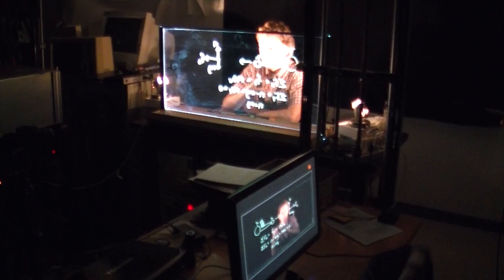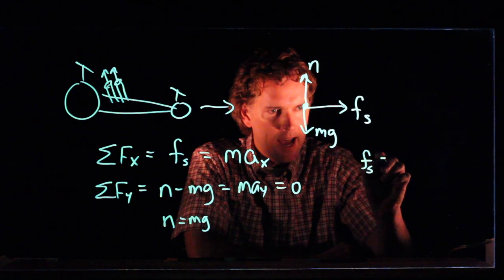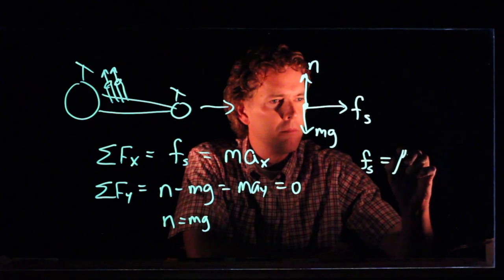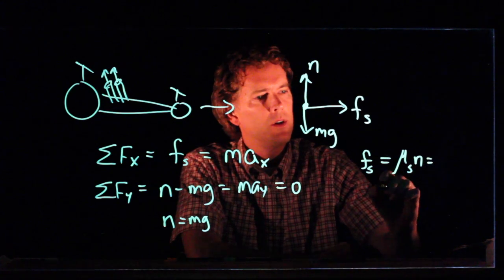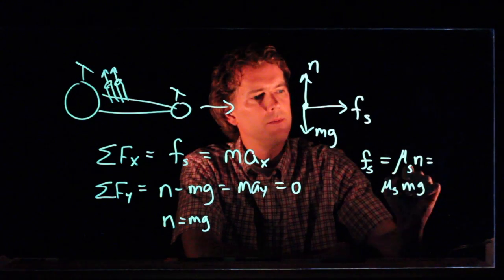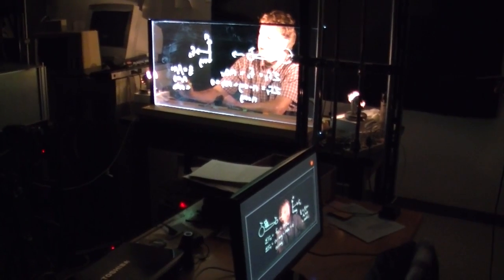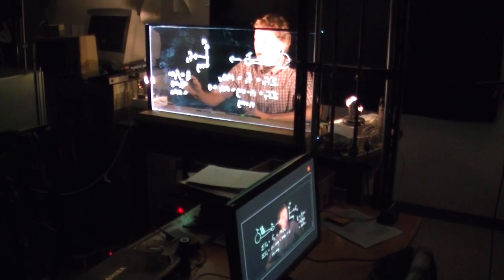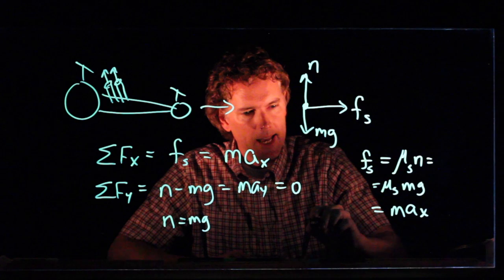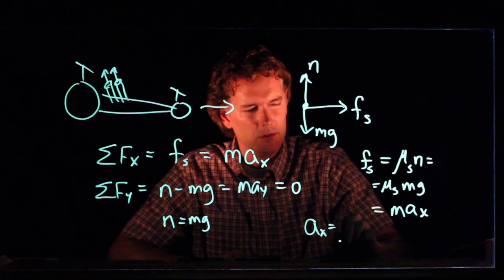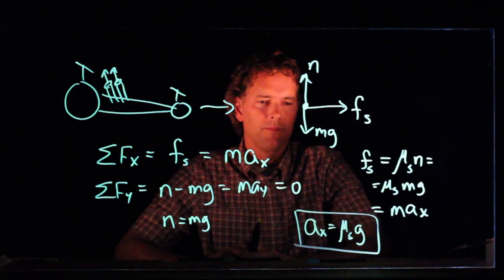But we know a little bit more about static friction. Static friction can have a maximum value of mu s times the normal force, which is mu s mg. That's equal to the mass times the acceleration. And now, if I equate these last two equations, look what happens. The m's drop right out, and I get acceleration equals mu s times g.